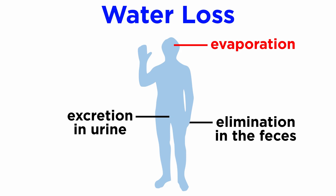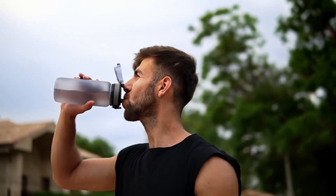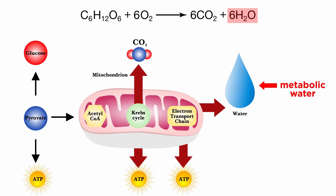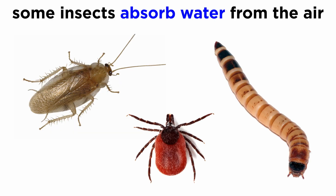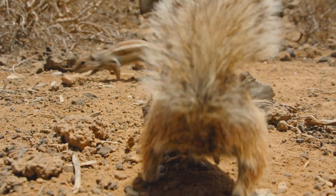Terrestrial animals lose water by evaporation from respiratory and body surfaces, excretion in urine, and elimination in the feces. They replace such losses by taking up water in food, drinking water when available, and retaining metabolic water formed in cells by oxidation of foods, especially carbohydrates. Certain insects, for example desert roaches, certain ticks and mites, and the mealworm, are able to absorb water vapor directly from atmospheric air. In some desert rodents, metabolic water gain may constitute most of the animal's water intake.